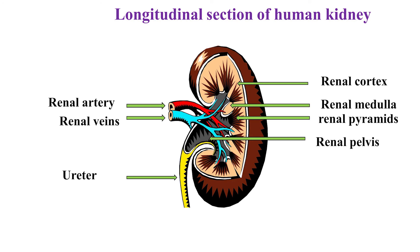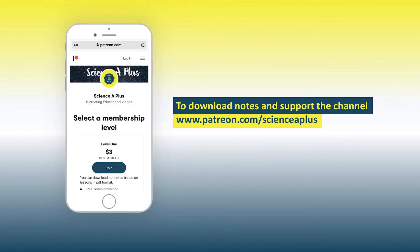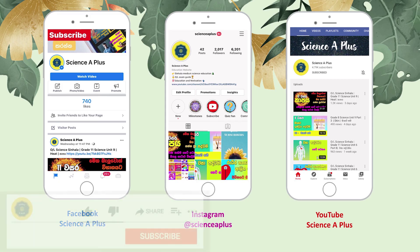Multiple branches inside the kidney ensure optimum blood supply and optimum filtering of metabolic waste from human blood circulation. Urine contains water, salts, urea, and uric acid. Patients with diabetes excrete sugar in urine, but in healthy individuals sugar is not usually found in urine. That brings us to the end of this lesson. Thank you for watching. If you wish to support our channel, see our Patreon page and don't forget to subscribe on YouTube.